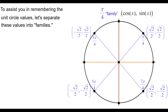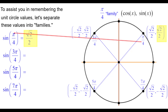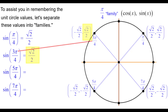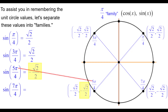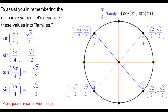The π/4 family: the sine of π/4 is positive √2/2. Similarly, the sine of 3π/4 is positive √2/2. The sine of 5π/4 is negative √2/2 — 5π/4 is in the third quadrant. And 7π/4 is in the fourth quadrant, also negative √2/2.